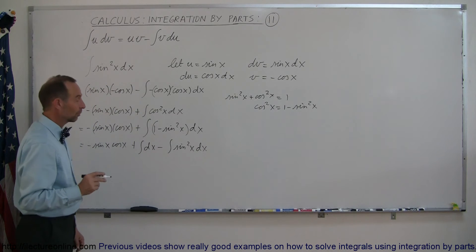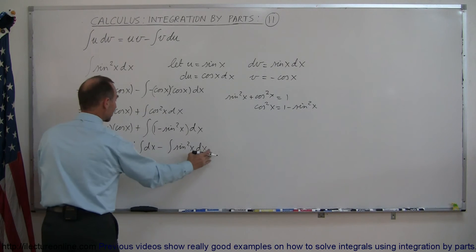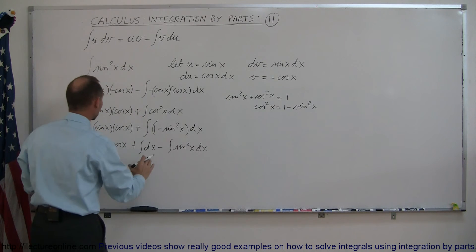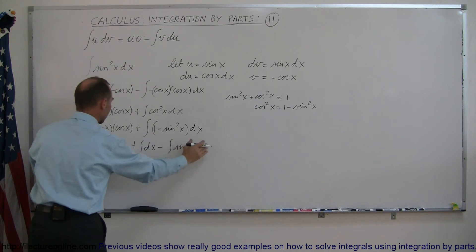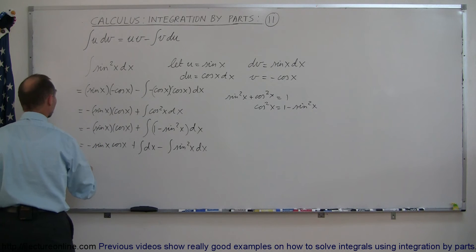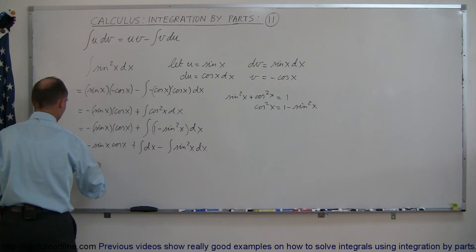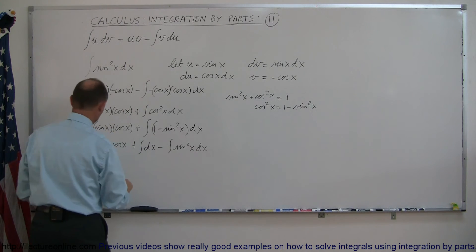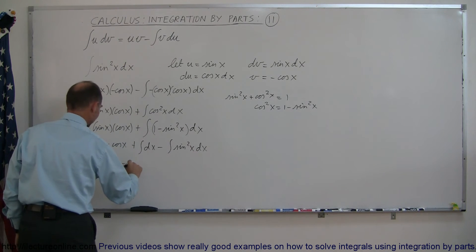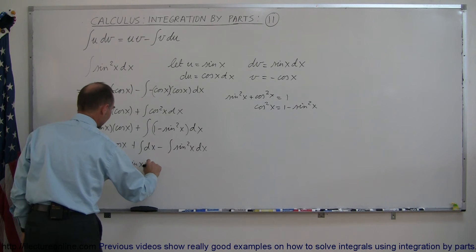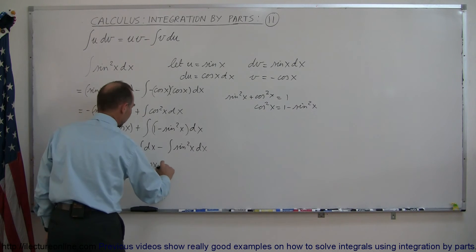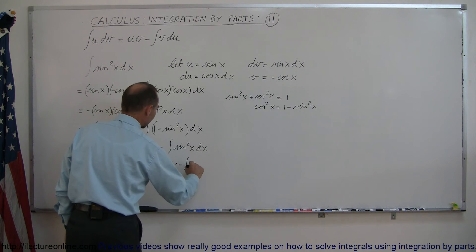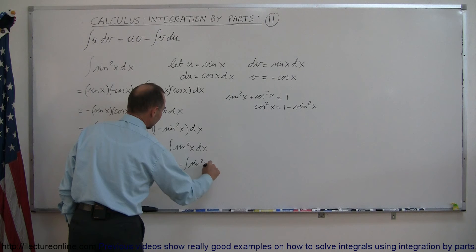Now we're in business because, remember, this whole expression on the right is equal to our original integral. So let's write it as an equation. The integral of sine squared of x dx equals minus the sine of x times the cosine of x, plus the integral of dx — which is simply x — minus the integral of sine squared of x dx.